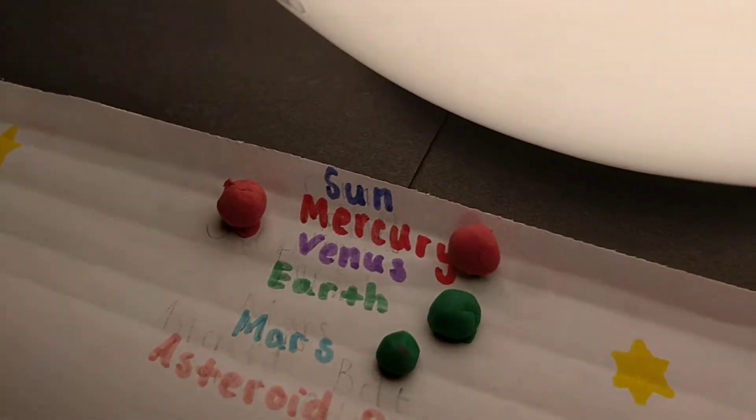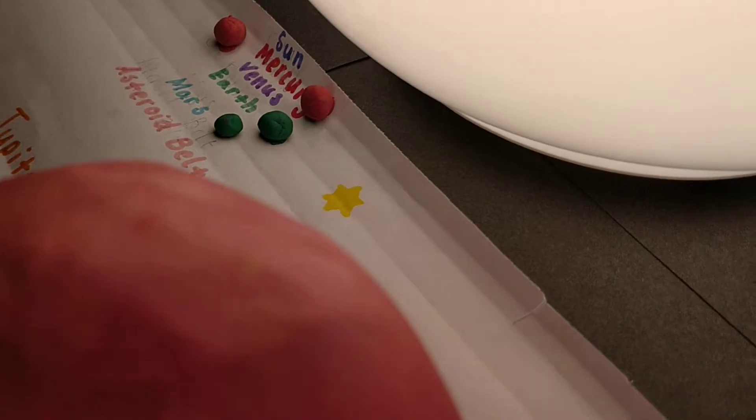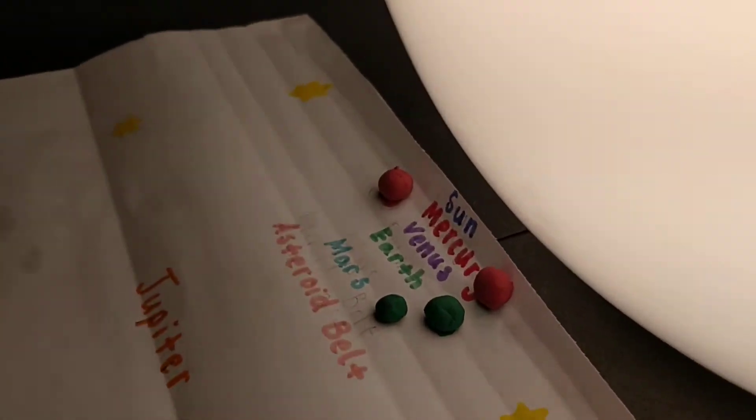Venus. The surface temperature can reach 471 degrees. It is often referred to as Earth's sister planet due to their similar size and mass.